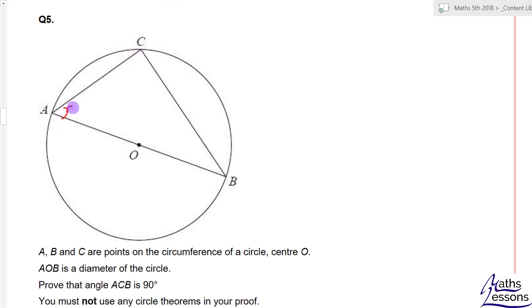So, if we call this one X and call this Y, and then draw a line in here, then you've got an isosceles triangle here, so this must be X, and this must be Y.